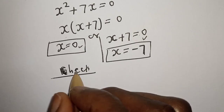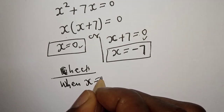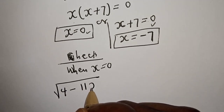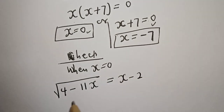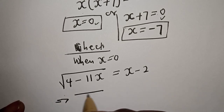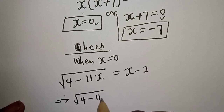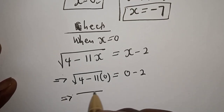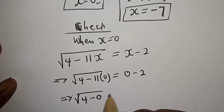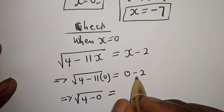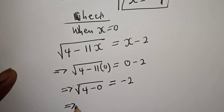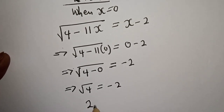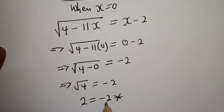Now let's check if our answers are correct. Let's check when x equals 0. We have square root of 4 minus 11 times 0, which must equal 0 minus 2. That gives square root of 4 minus 0, which is square root of 4, equals minus 2. But square root of 4 is 2, and 2 is not equal to minus 2. Therefore x equals 0 is an extraneous solution.